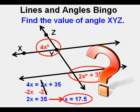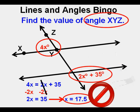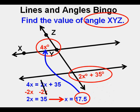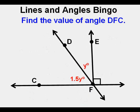Is 17.5 our answer? No, it's not. It's an intermediate answer. The problem asks for the value of angle XYZ. You take that 17.5 and plug it in for x. Angle XYZ is 4 times 17.5 or 70 degrees, and that is our answer. 70 degrees, not 17.5. Don't forget to check by plugging in 17.5 for x in 2x plus 35 to see if that is also 70 degrees, and it is, checking our answer.